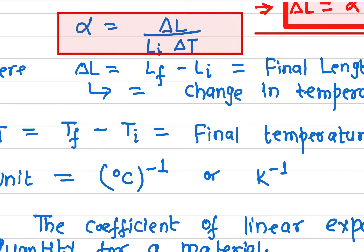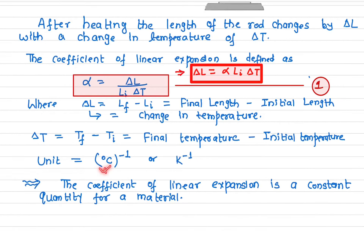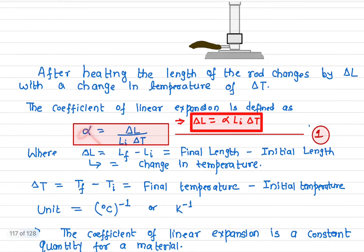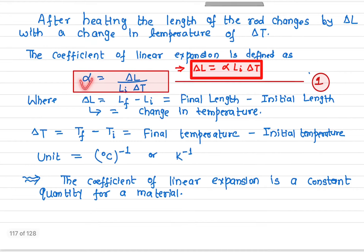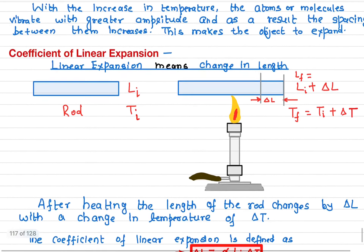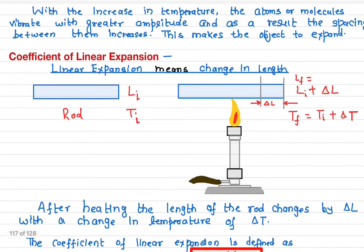So the unit of alpha is one over degree Celsius, or equivalently one over Kelvin. Remember, alpha is constant for a given material. Once we know alpha — which can be measured experimentally — we can find the change in length over any given temperature or temperature range.